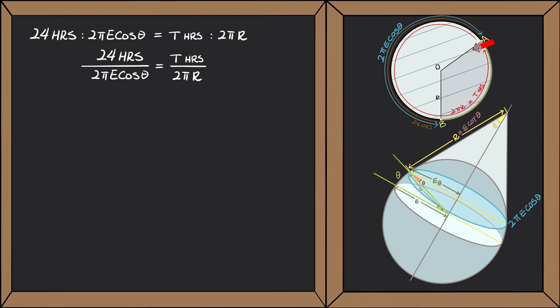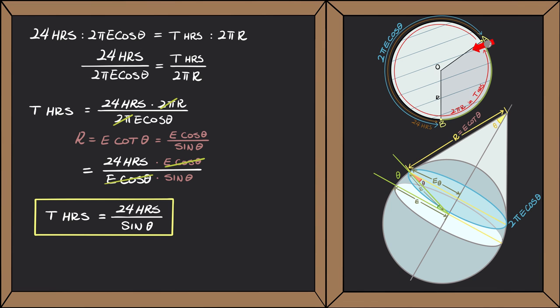Solved for t, using R equals E cotangent theta, we get t equals 24 hours divided by sine theta.